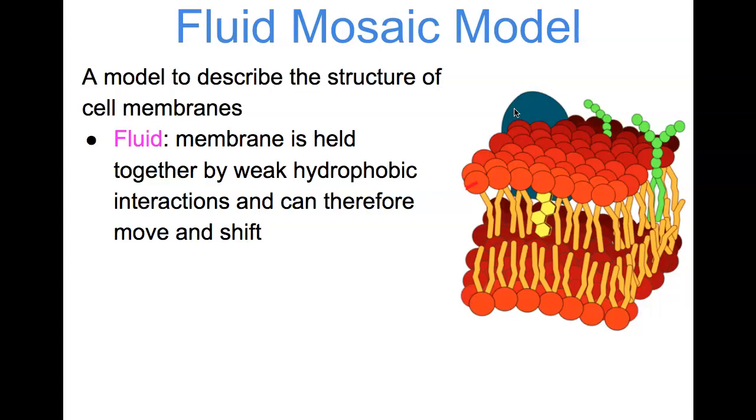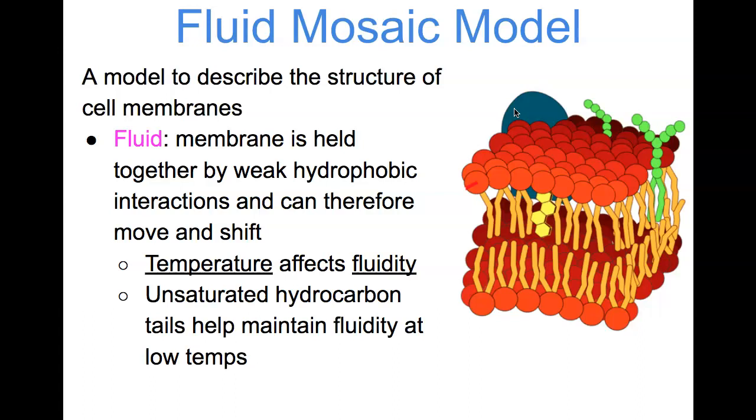These things move around each other, and ultimately things that will affect their movement are things that affect their fluidity or the ability to flow, like temperature. So temperature affects fluidity. Also, unsaturated hydrocarbon tails help maintain fluidity at room temperatures.